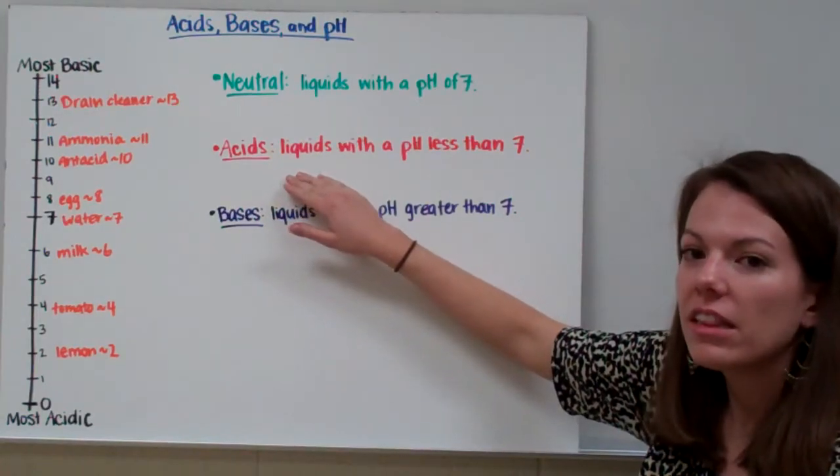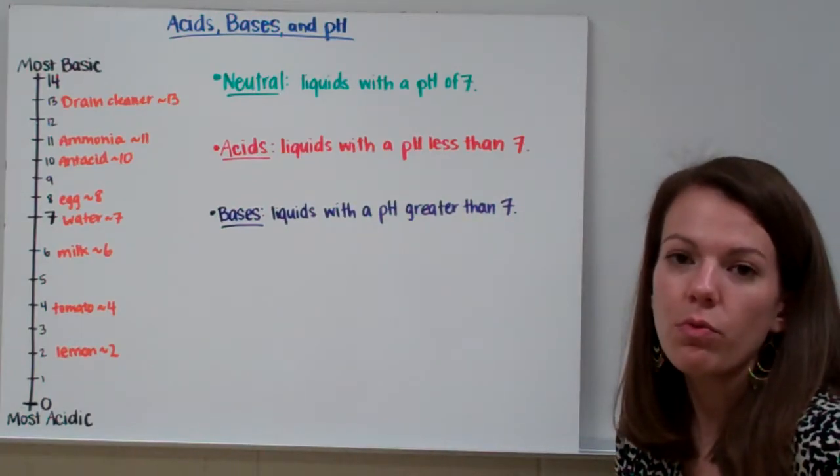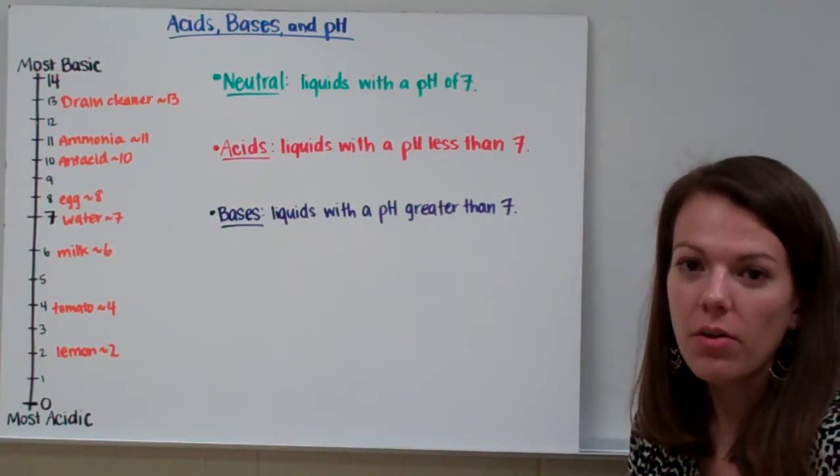Liquids that have a pH less than 7 are called acids. So anything that has a pH of 6, 5, 4, 3, 2, 1, all the way to 0 is an acid.